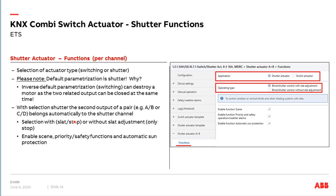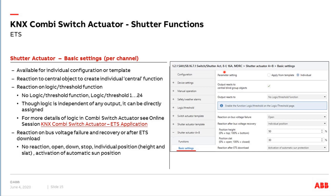We always have a pair, and then you choose whether you have slat adjustment blinds or another application needing only open/close and stop functions. Three further options: enable scene management, enable safety and priority functions — very important for exterior shutter blinds — and enable automatic sun protection. The next page is basic settings, where you choose whether to apply a template or have individual parameterization, always available for each channel on all parameter pages.